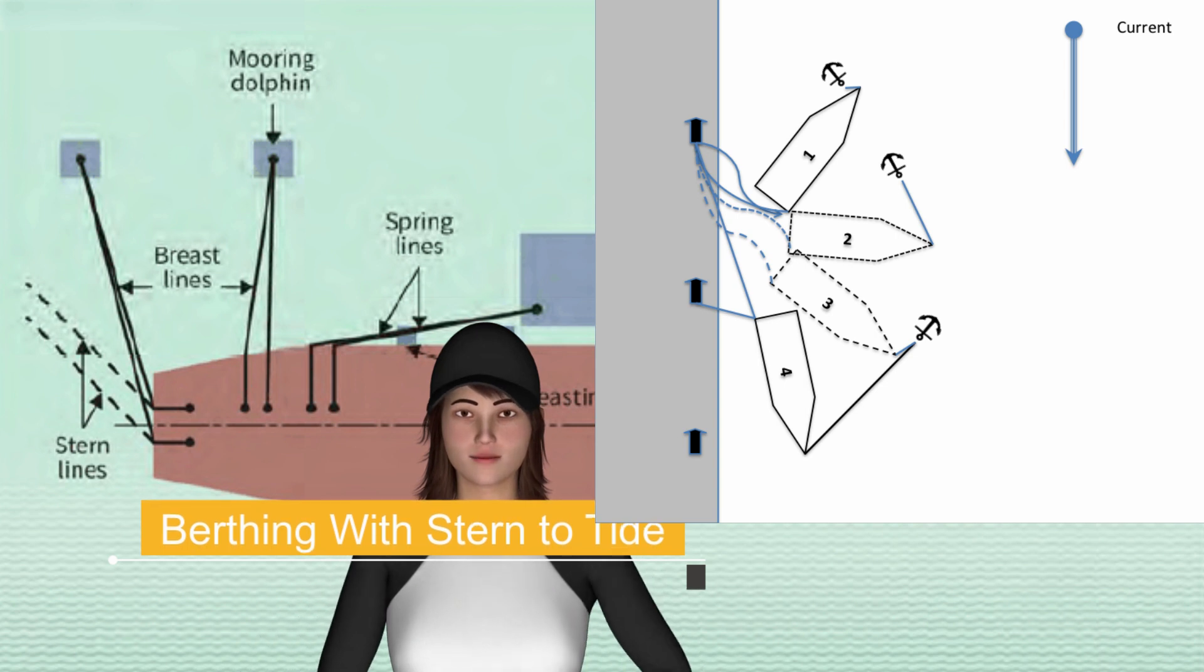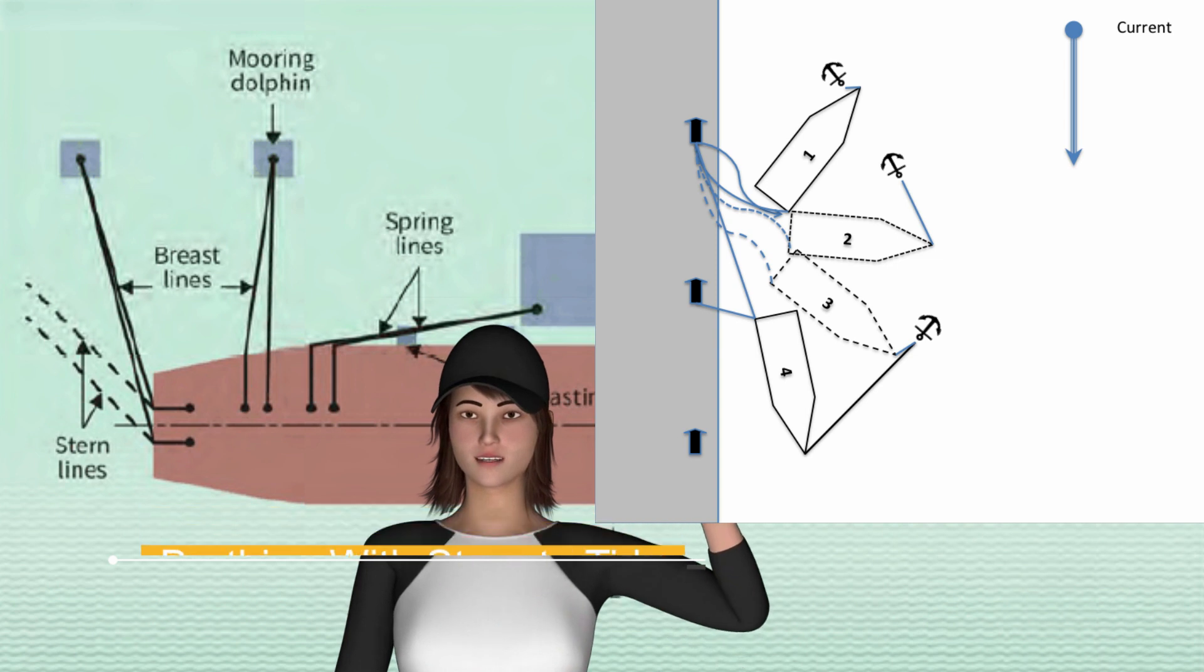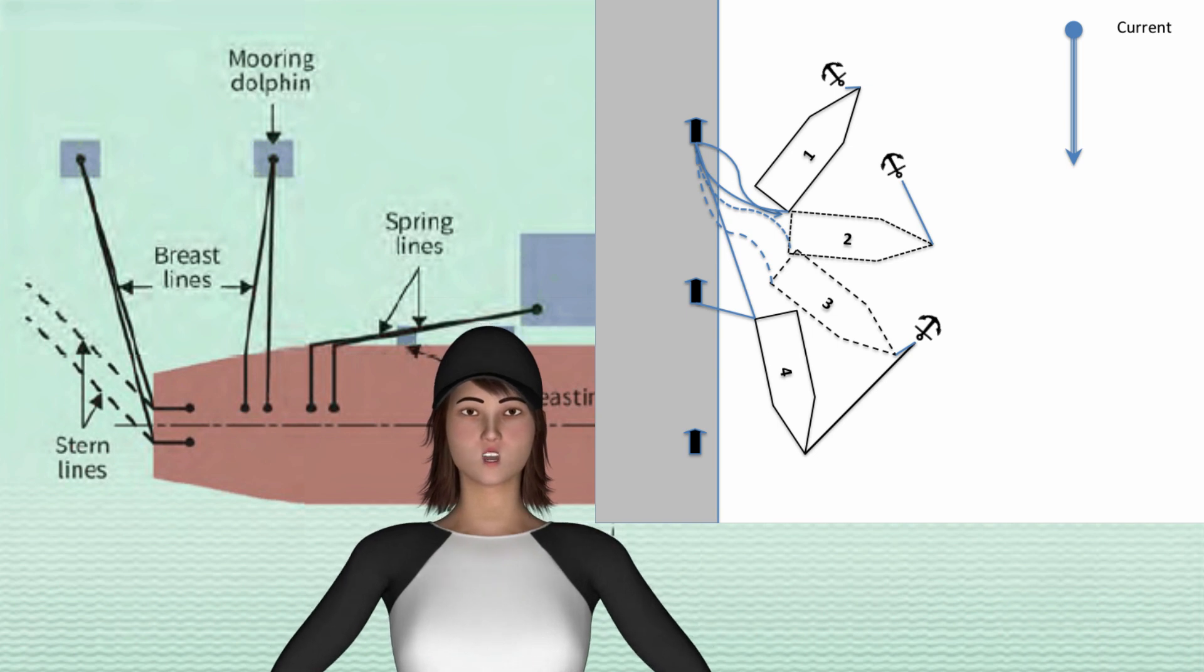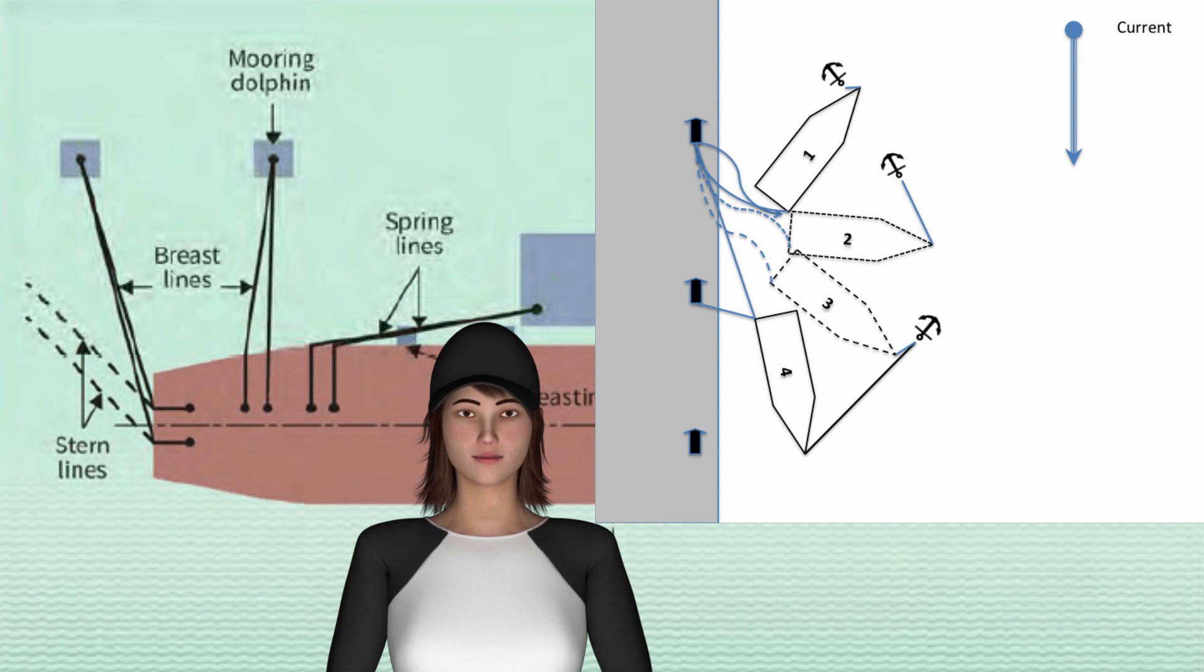In this video we will discuss berthing stern to tide. This is one example of many. This does however require a depth bow crew who can use the anchor. Care must be taken of fouling the anchor.